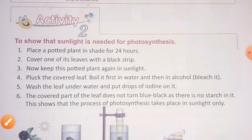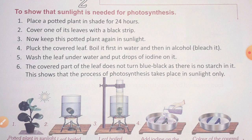Now the second activity: to show that sunlight is needed for photosynthesis. The process of a plant making food is called photosynthesis. Without sunlight, photosynthesis is not possible. So we need to prove that sunlight is necessary for photosynthesis.